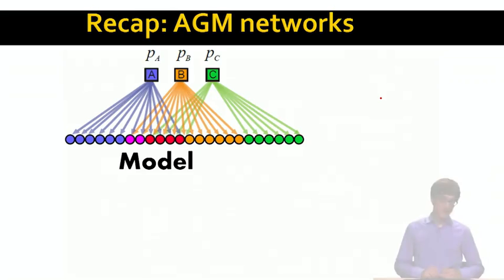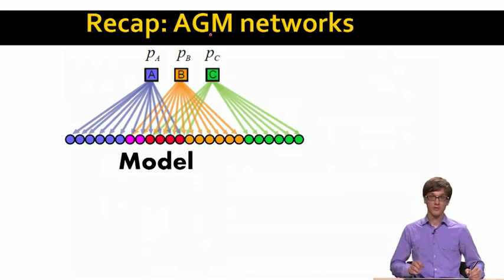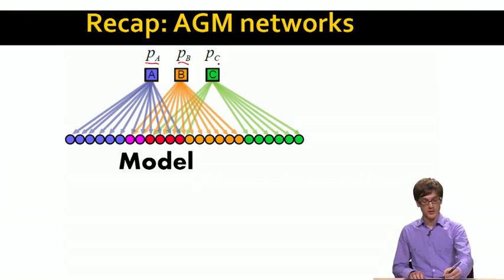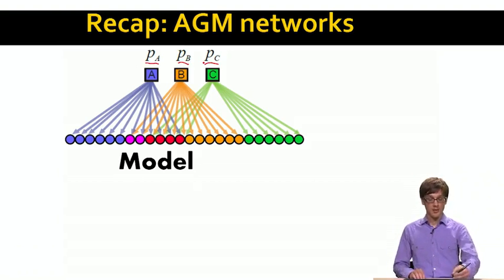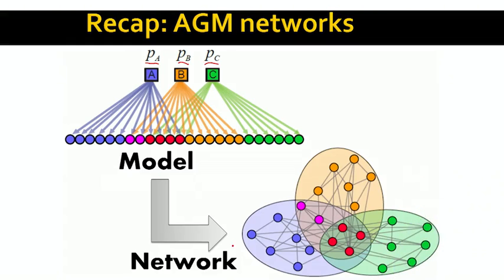What we have done so far is defined our affiliation graph model. Here is a different specification of the model where we have three communities, each with a different linking parameter. Given such a model, we can generate a network. Here's a picture of the network that would arise from the model above. Each community can be thought of as a tile. The red nodes in the overlap of all three communities are very well connected, the pink nodes also connect heavily with each other, while parts of communities without overlap are less well connected.